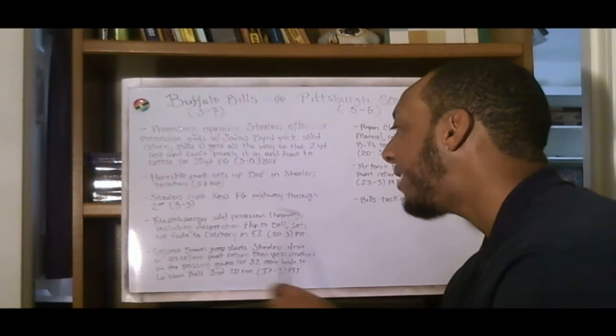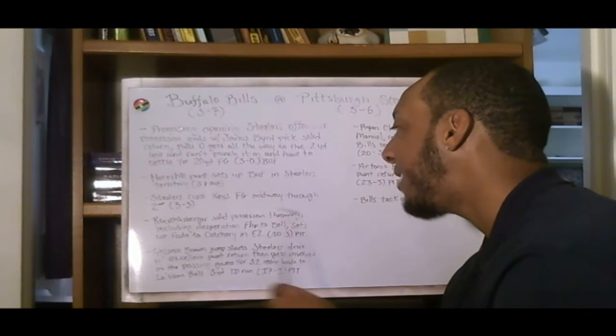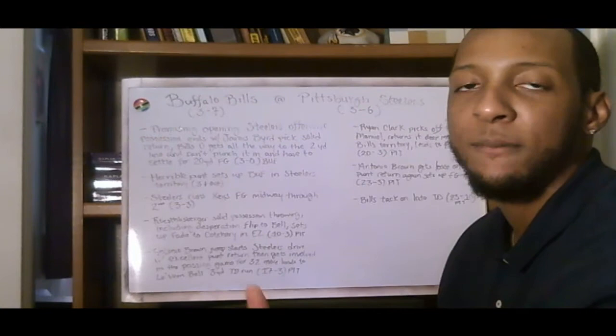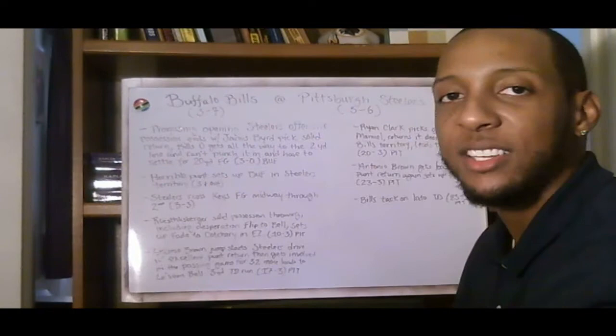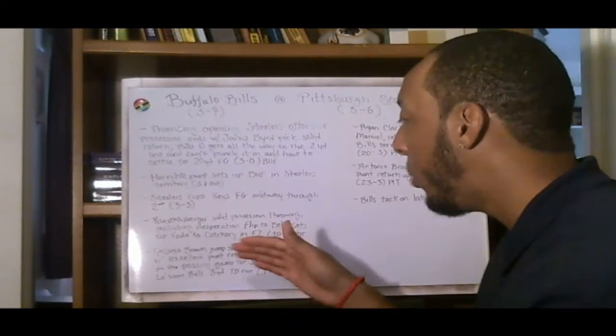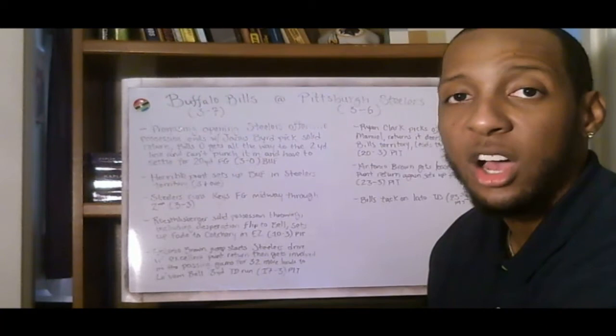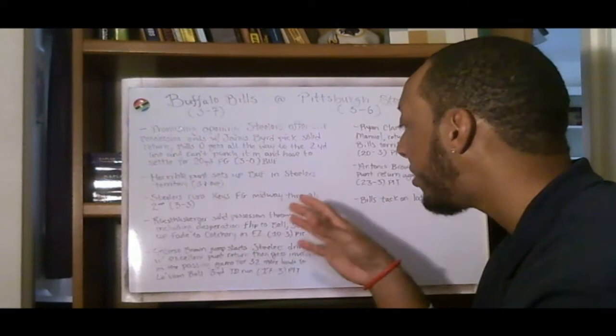Roethlisberger, solid possession throwing, including a desperation flip to Le'Veon Bell, which sets up a fade to Jericho Cottery in the end zone. It's 10-3 Steelers. At this point now, I feel like they've got firm control over this football game. And the Bills really aren't doing anything. They've been stagnant on offense all game long. I expect the Steelers, and again, this is not a good Steelers football team. They don't score a lot of points, but I expect them to be able to score enough. With this touchdown giving them a 10-3 lead, I expect them to run away from the Bills at this point and solidify a victory at home versus a very young and hungry upstart Bills team. But they don't know how to win on the road. They won't be able to get it done. I think the Steelers have a firm grasp of this game at this point.